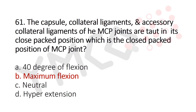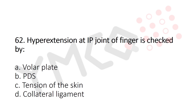Question 62: Hyperextension at the IP joint of the finger is resisted by — Option A: volar plate, Option B: FDS, Option C: tension of the skin, Option D: collateral ligament. The answer is Option A, volar plate.